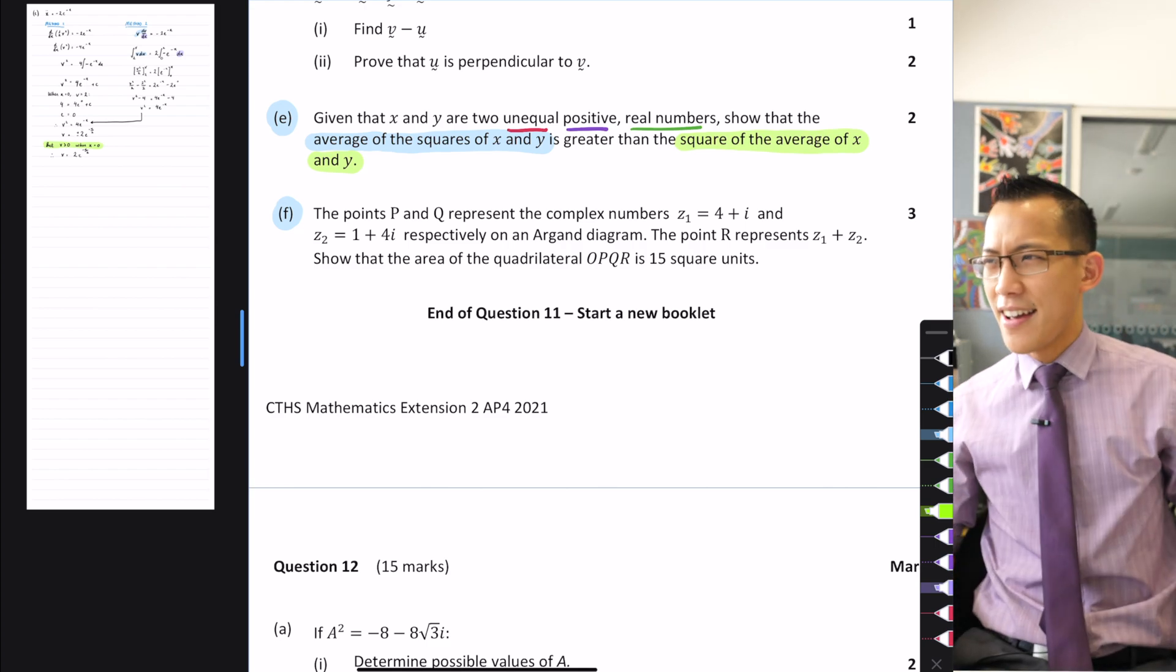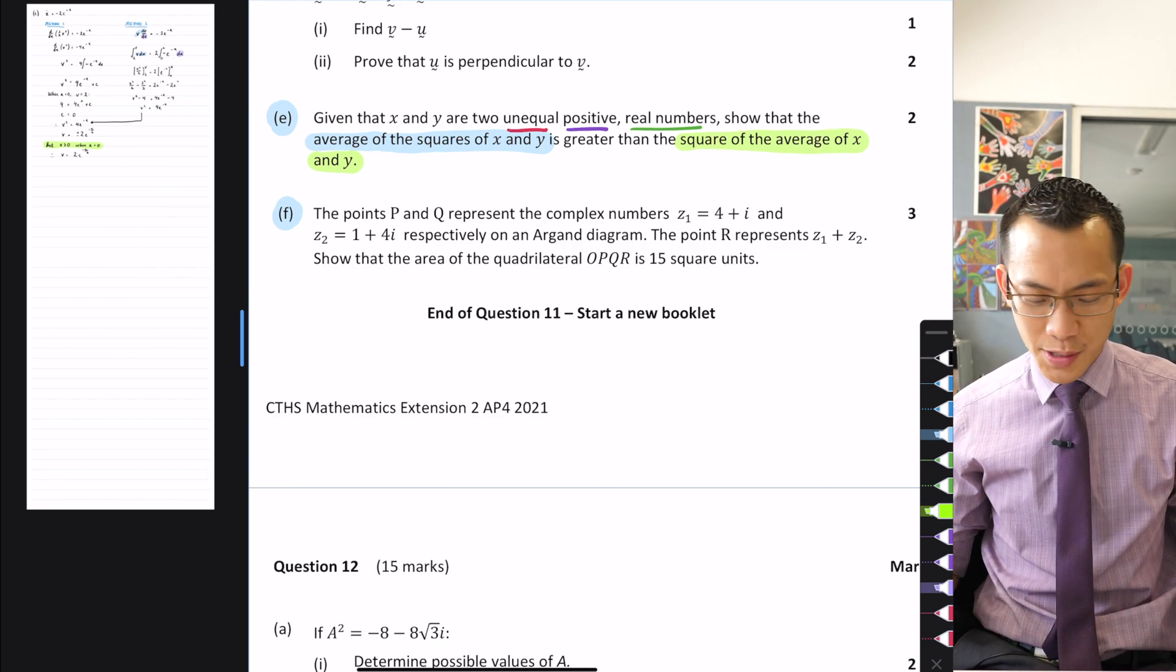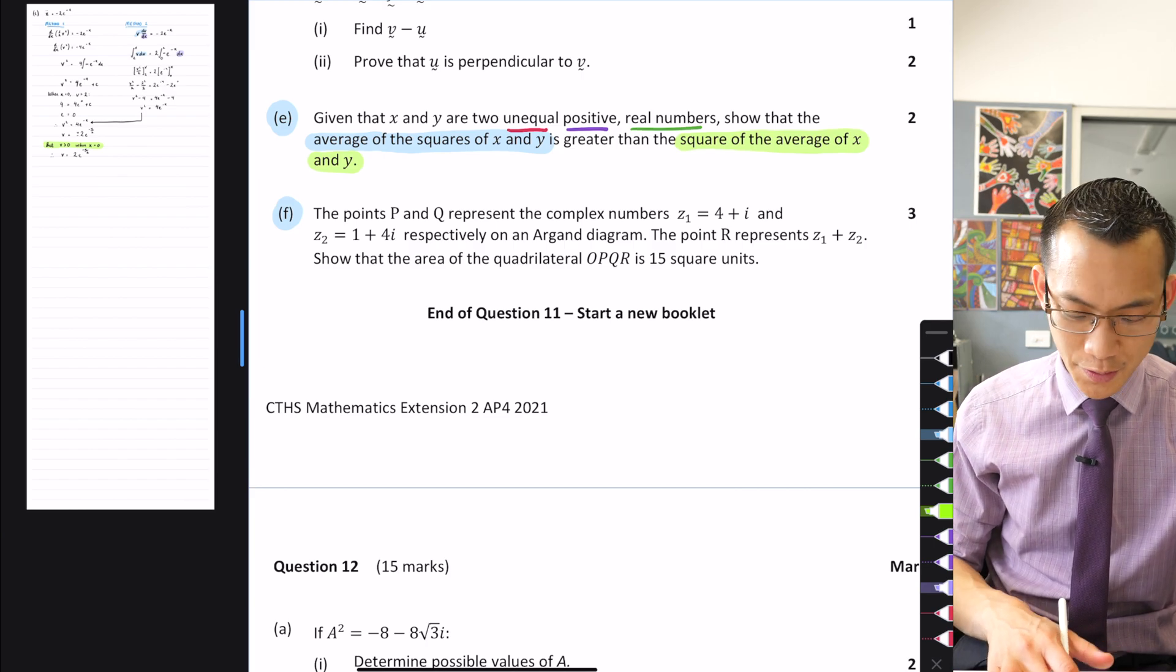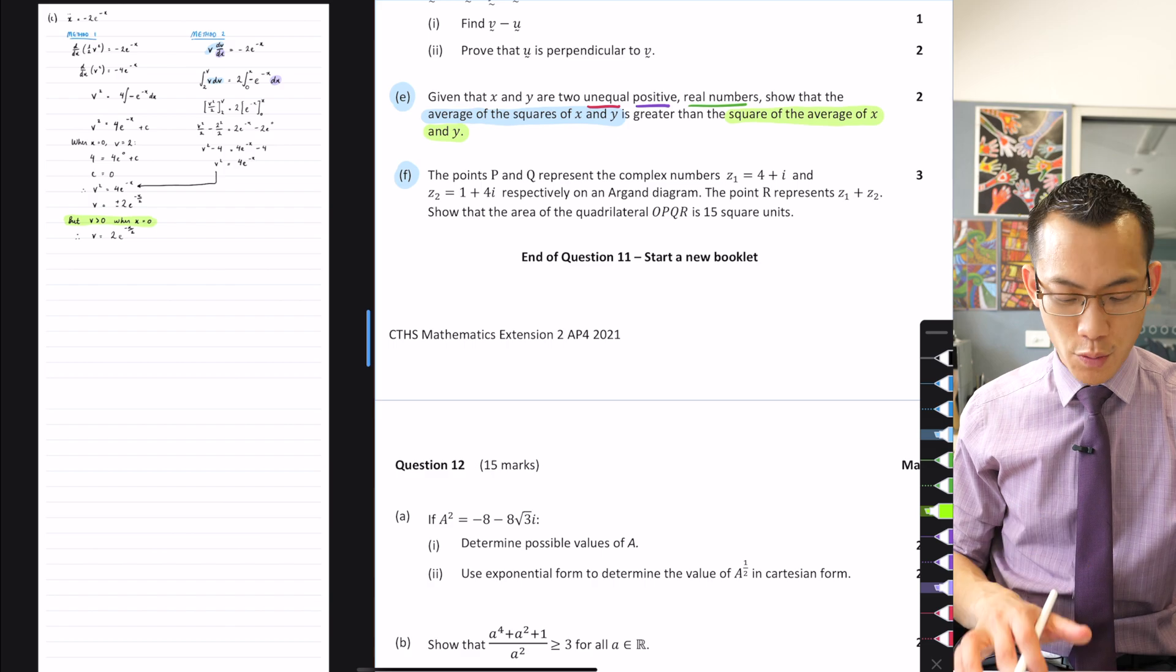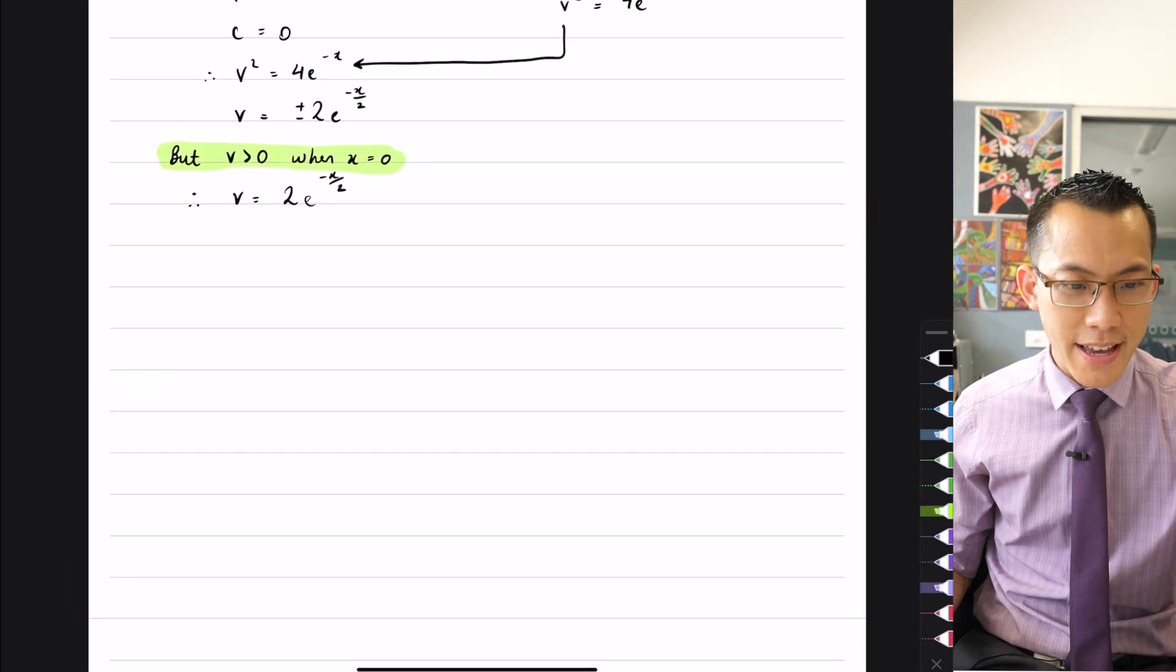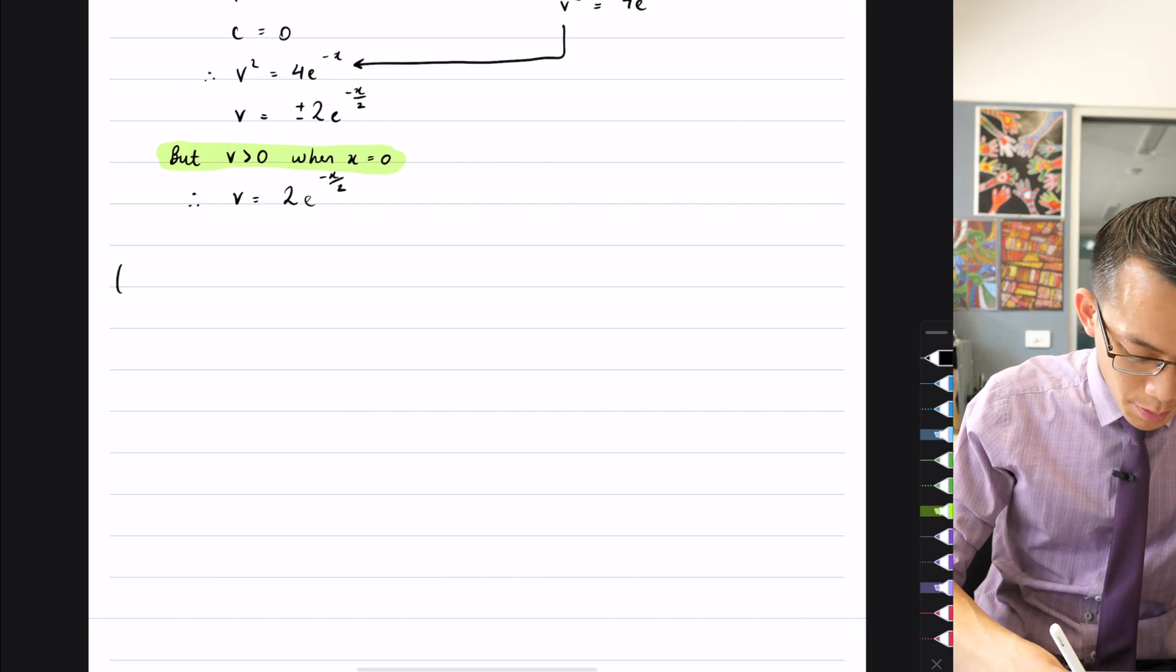It feels a bit like AMGM inequality-esque, and it is related to that, but it is not exactly the same because the squares are a little bit different. So how do we deal with this proof question and this inequality? Let's have a look. The first thing, and this is part E that I'm doing at the moment, so I'll just write that down.